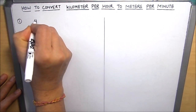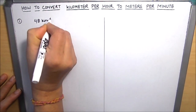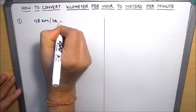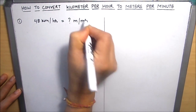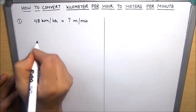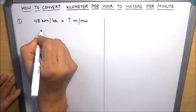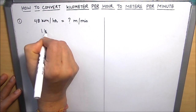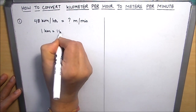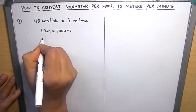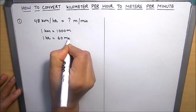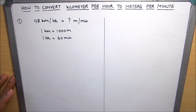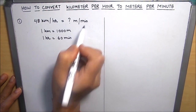Let's convert 48 kilometer per hour to meters per minute. For this conversion, we should note two standard conversions: 1 kilometer is 1000 meters, and 1 hour is 60 minutes. We are going to use these two standard conversions to convert 48 kilometer per hour to meters per minute.